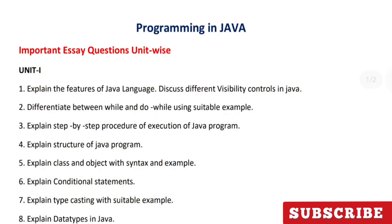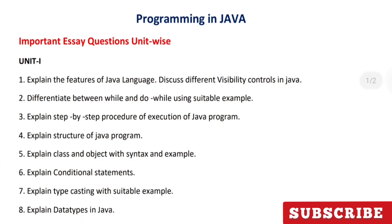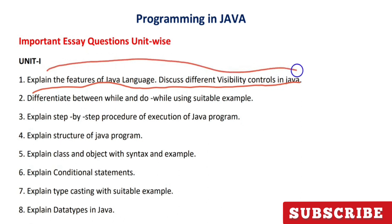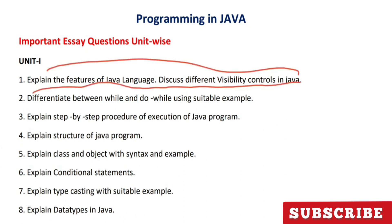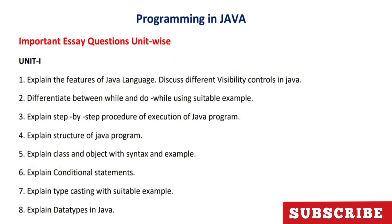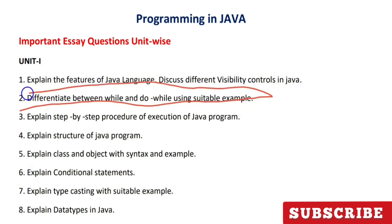Here I have designed the questions unit-wise. From the first unit, you will be having eight important questions. The first question is: explain the features of Java and discuss the different feasibilities and control in Java. The second question is: explain the differences between different kinds of looping statements — while loop, do-while loop — and differentiate between while and do-while using suitable examples.